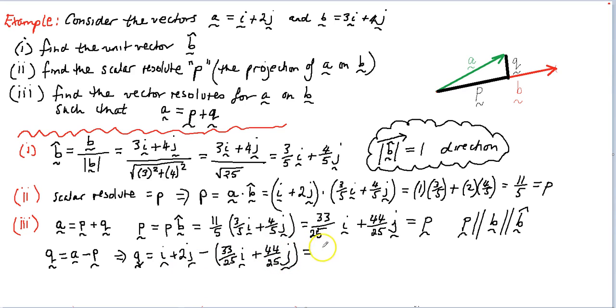That works out to be, putting those all on the same denominator there, we're going to get 25 on 25 I plus 50 on 25 J minus 33 on 25 I minus 44 on 25 J. So Q is going to simplify to become negative 8 on 25 I plus 6 on 25 J.